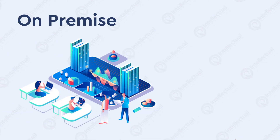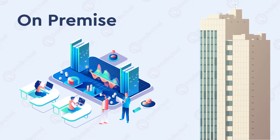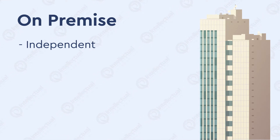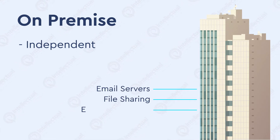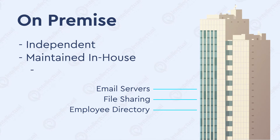Let's first start with the term on-premise. The term on-premise essentially means that an organisation is going to be self-hosting their corporate assets inside their own company building or data centre. This means that the business has no reliance on any cloud services and is 100% fully maintained by the organisation itself. Essential services like email servers, file sharing, and employee directory would be maintained in-house within the company building. This is what is considered an on-premise deployment and, as you may expect, it can be a lot of work to maintain.